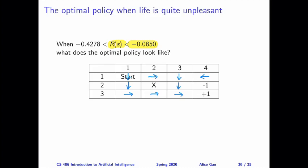So to summarize for this case, because life is quite unpleasant, the reward of exploring, the negative reward, is quite a lot. So we want to take the shortest path to get to the plus one state as soon as possible. And if there's a risk of falling into the minus one state, we are willing to take it.